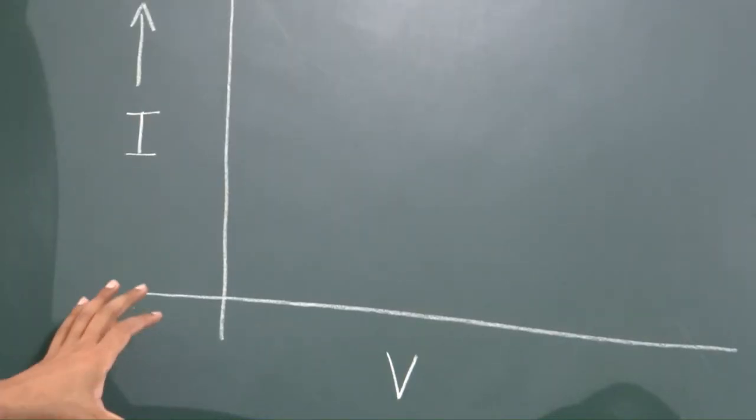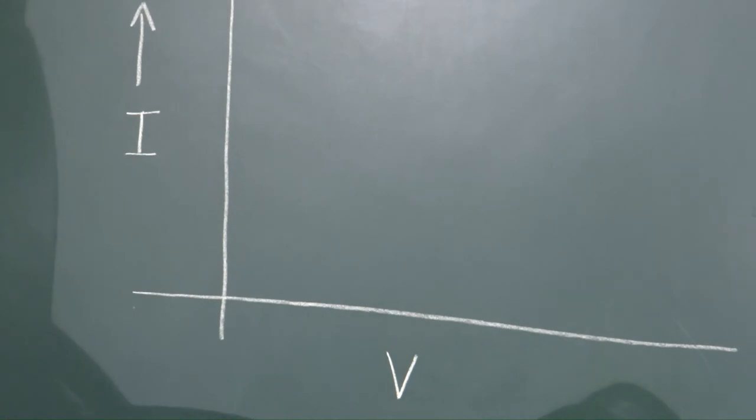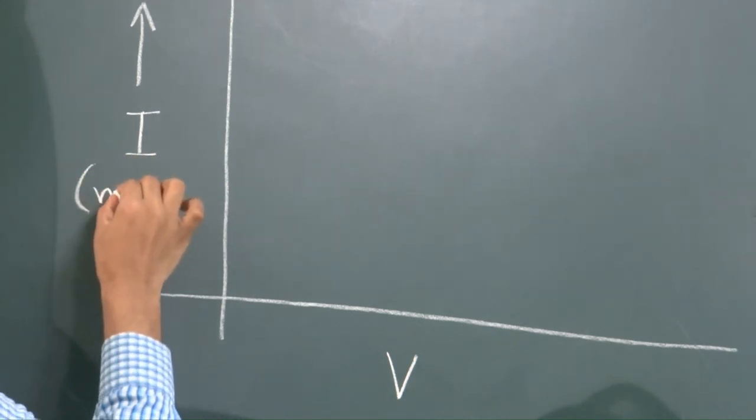Now let us plot the graph for the forward bias. So we are plotting an IV graph, that is the current on the y-axis. We are plotting a graph for the forward bias of the PN junction. So we are taking the voltage on the x-axis and current on the y-axis. The current is taken in milliamperes.